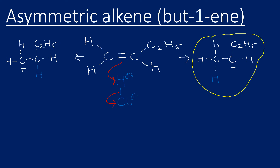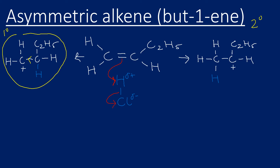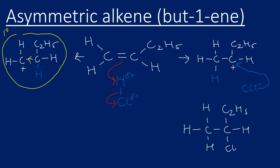The carbocation on the right is a secondary carbocation, while the carbocation on the left is a primary carbocation — it only has one electron-donating group. From the previous video, we know that secondary carbocations are more stable than primary ones. The secondary carbocation on the right is therefore more stable, meaning the product formed through it is the major product. Adding Cl− to that secondary carbocation gives 2-chlorobutane as the major product.